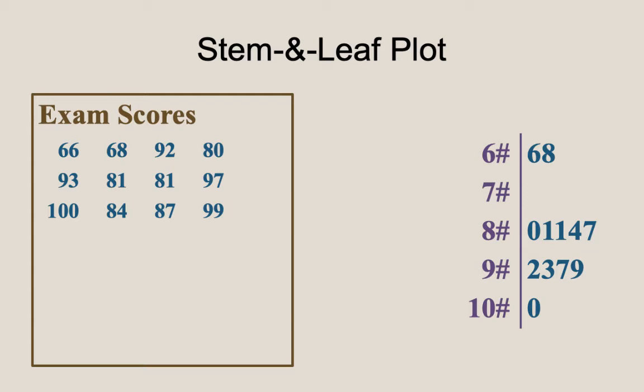In particular, the stems are standing in for the tens and higher places in our values in the data, and the leaves are recording the ones or the units place in our values. The hash sign indicates that the ones place is what is to be filled in if you were to try to reconstruct the data.